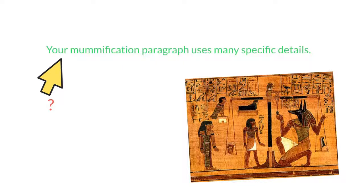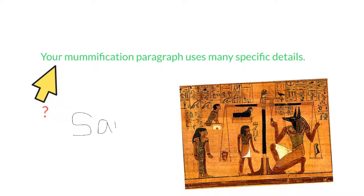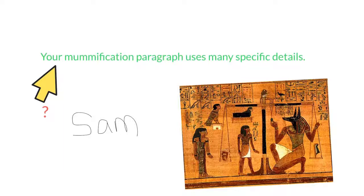We're going to direct the sentence to a specific person using their name. Let's use the name Sam. I am talking to Sam — I am addressing him. I'll say 'you' because it's a direct communication, but I'll also say Sam's name so Sam knows I'm talking to him. I can put this address in a variety of places, because it's not actually part of my main sentence. 'Your mummification paragraph uses many specific details' is a complete idea on its own — Sam is an extra element.